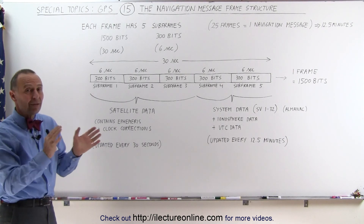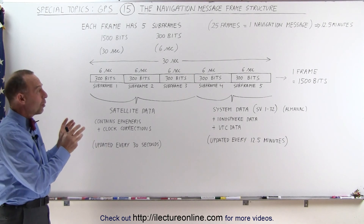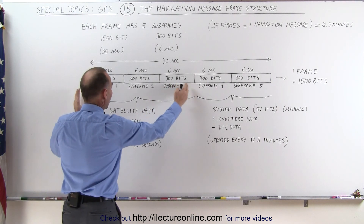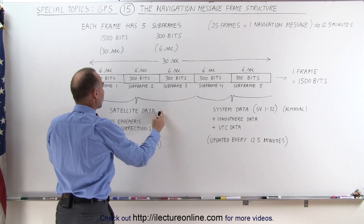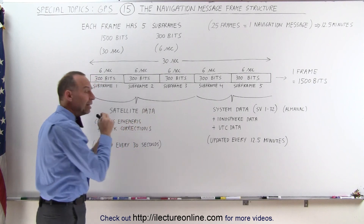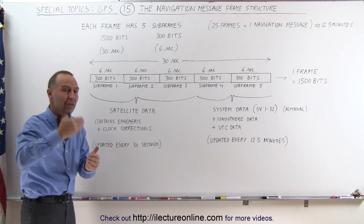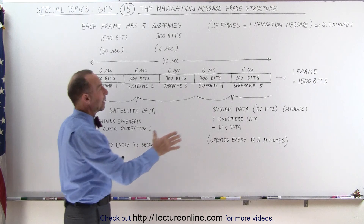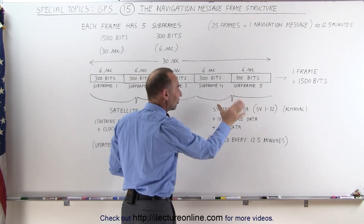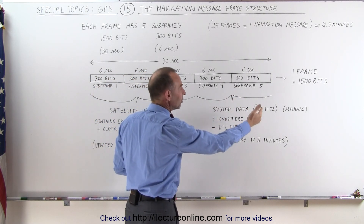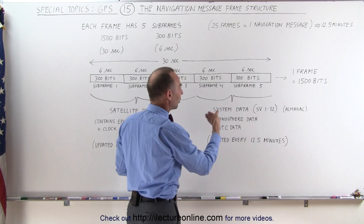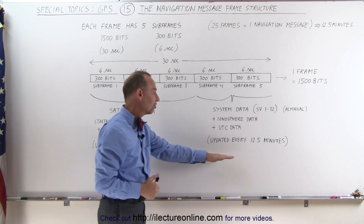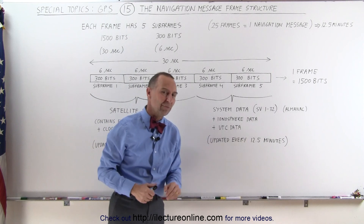The frame is divided into what we call five subframes. The first three subframes are utilized to give satellite data of the individual satellite that the receiver is receiving the message from. The last two subframes are used for system data for all the space vehicles — the almanac, ionosphere data, and UTC data — which gets updated every 12 and a half minutes.